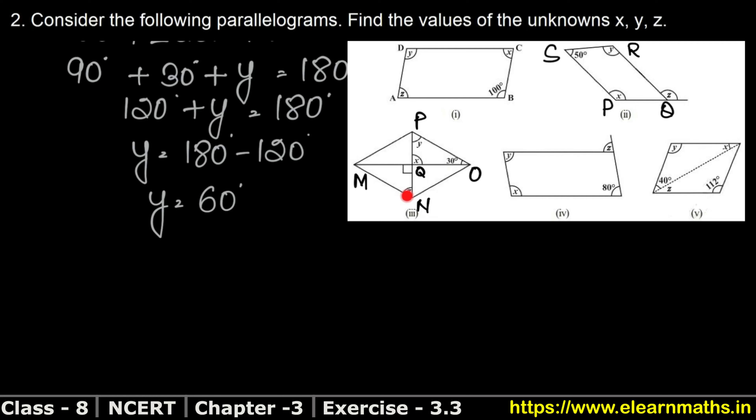Now z is left. Y and z will be alternate interior angles. If you see, OMNP is a parallelogram, so opposite sides are parallel: OP is parallel to MN, and MP is parallel to NO.